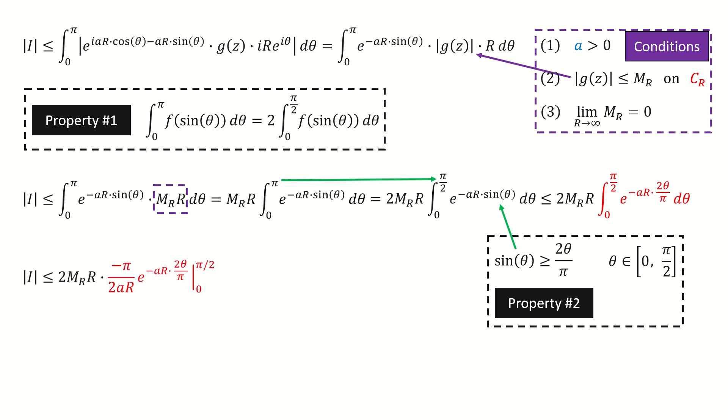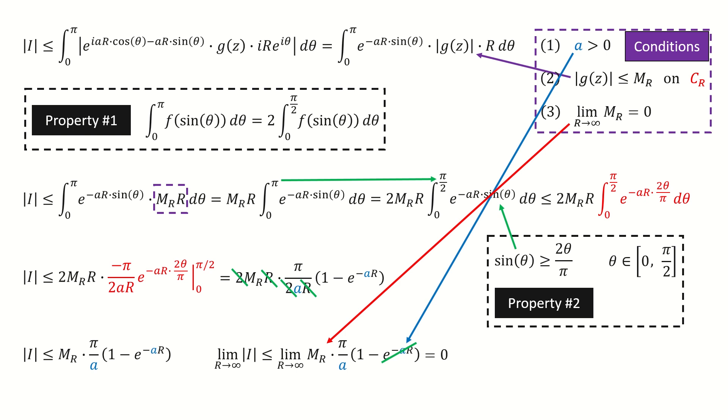For this red color integral, it's simple. So we just integrate it. Then we plug in numbers. 2r cancels out. And we got here. Then we take the limit. Now we use condition number 1. Because a is positive, so this term vanishes when the radius r goes to infinity. And finally, we use condition number 3. Because the upper bound goes to 0, so the limit goes to 0. Therefore, we complete the proof for Jordan's Lemma.